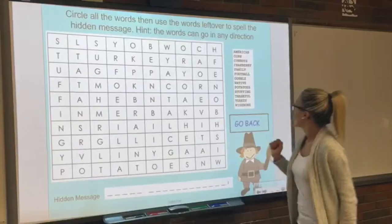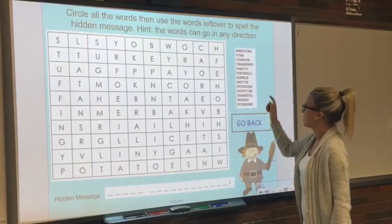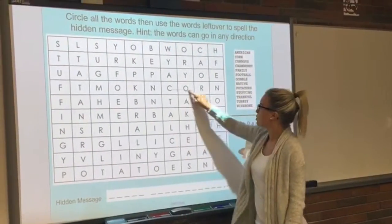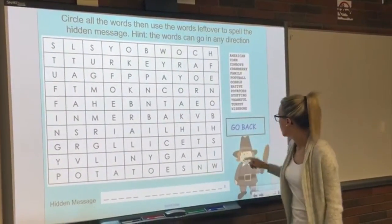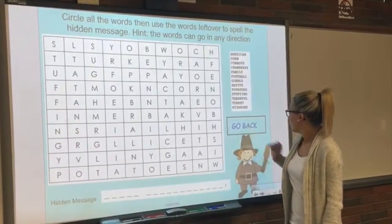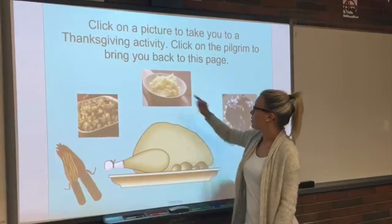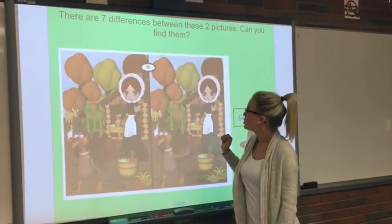Students can pick another word to unscramble — for example, corn would go right here. They can go back and then click on the mashed potatoes photo for another activity.